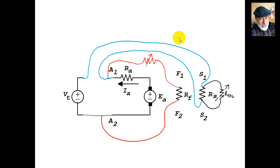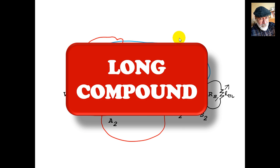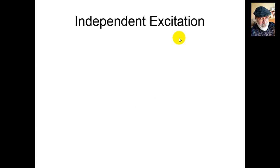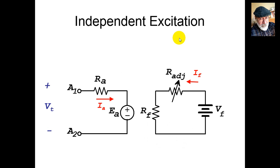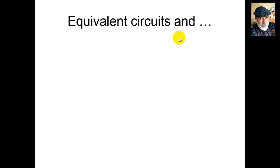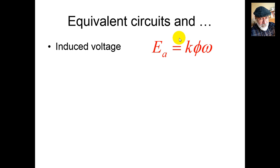If we move the field circuit away from the armature, we have long compound excitation. To finish, we also include independent excitation. Now the equivalent circuit: the armature circuit on the left and the field coil circuit on the right. The induced voltage E_A is a function of flux and how quickly the machine is moving — omega in radians per second for the real rotating machine.